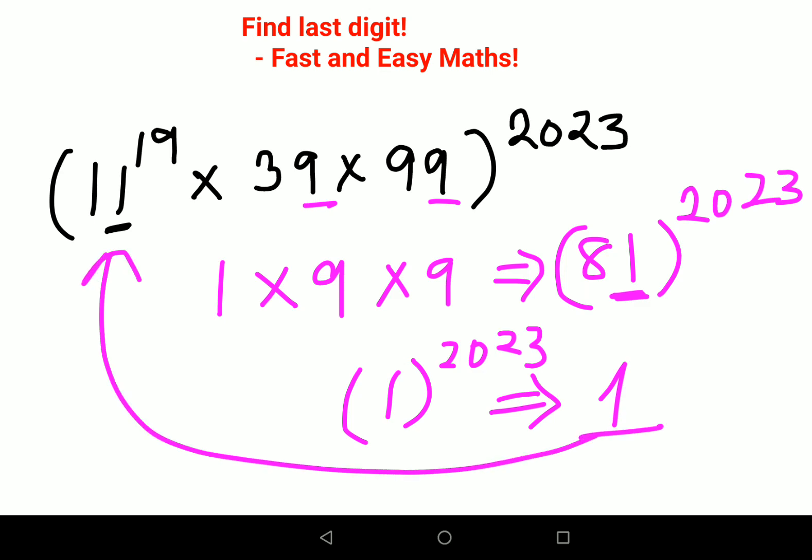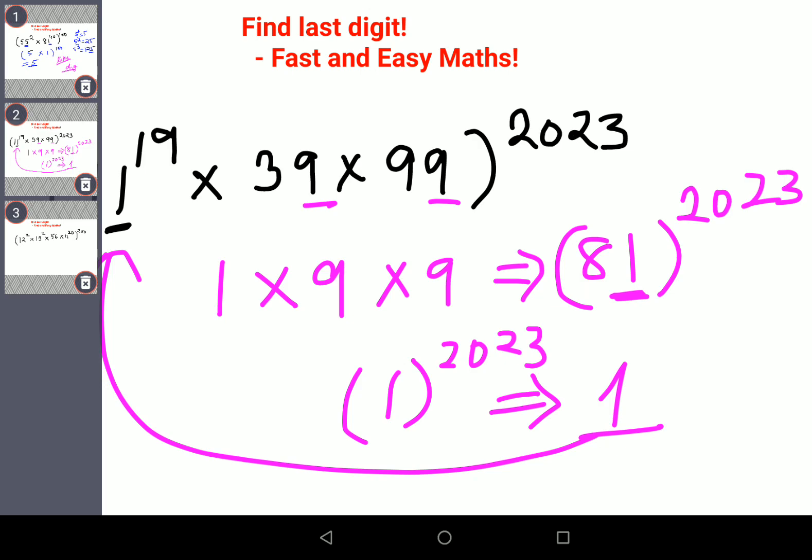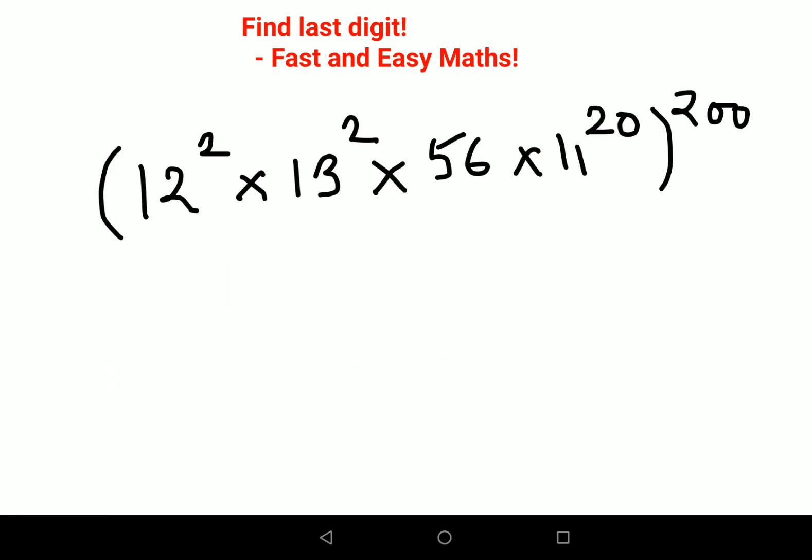Now very quickly let's look at this one. Here we have 12 squared, so 2 squared is 4. 3 squared is 9. Then we have just a 6 and then we have 11. So again, 1 raised to any number is just 1. So we have 4 into 9 that gets you 36, into 6 gets you 216.